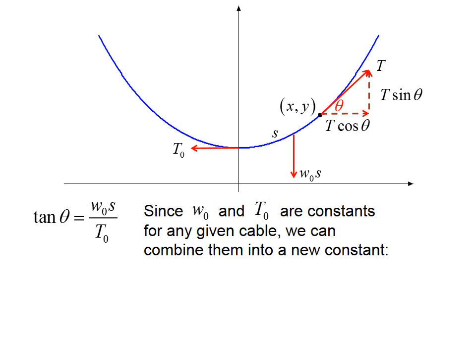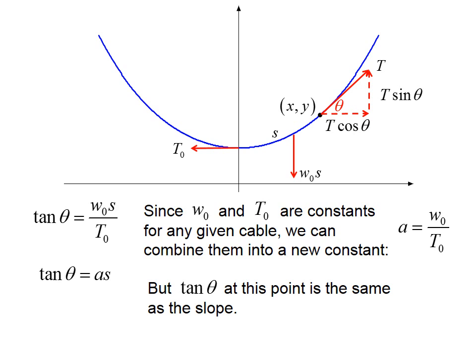Since w sub o and t sub o are constants for any given cable, we can combine them into a new constant: a equals w sub o over t sub o. Tangent theta equals a s. But tangent theta at this point is the same as the slope. So dy dx equals a s.